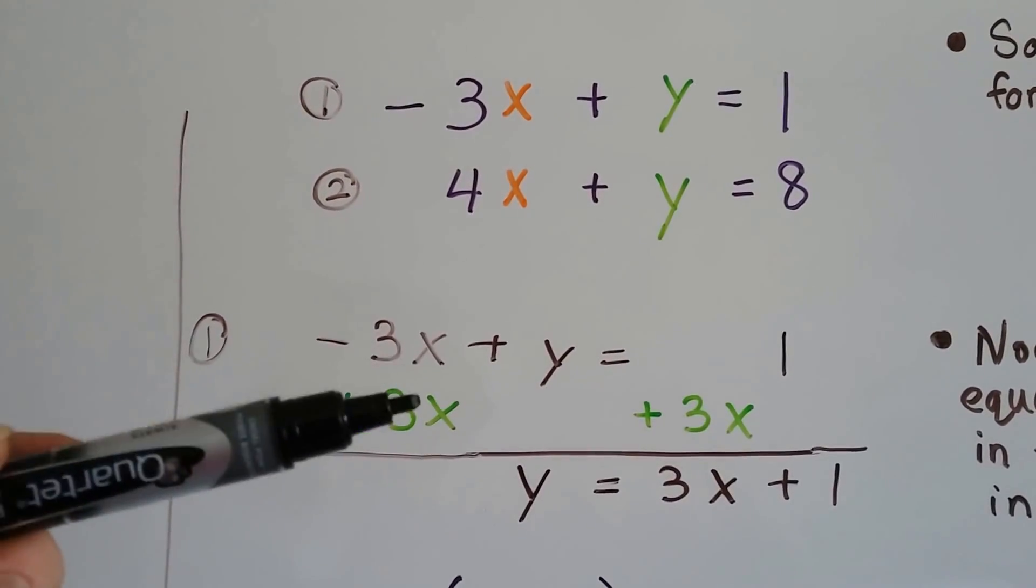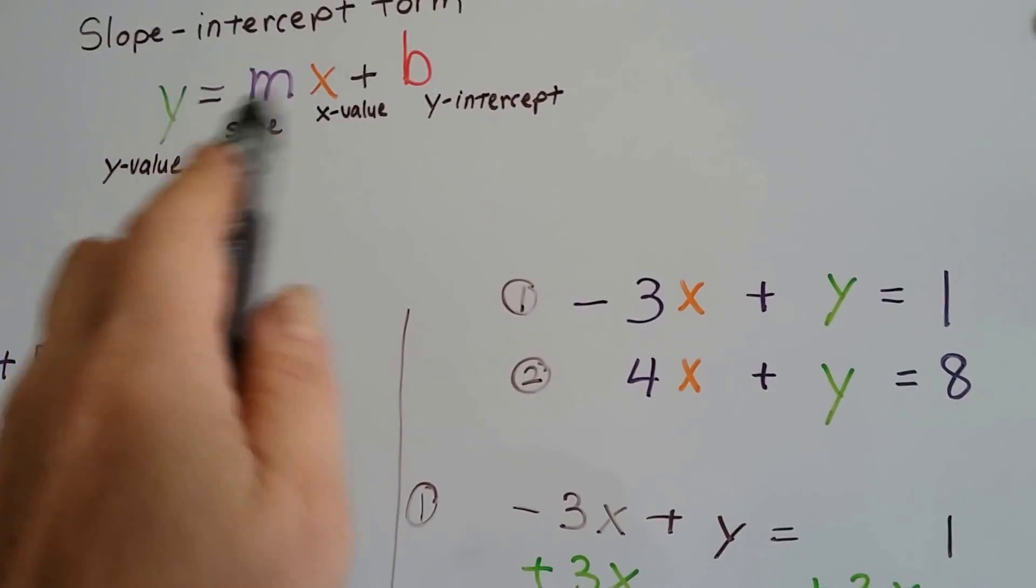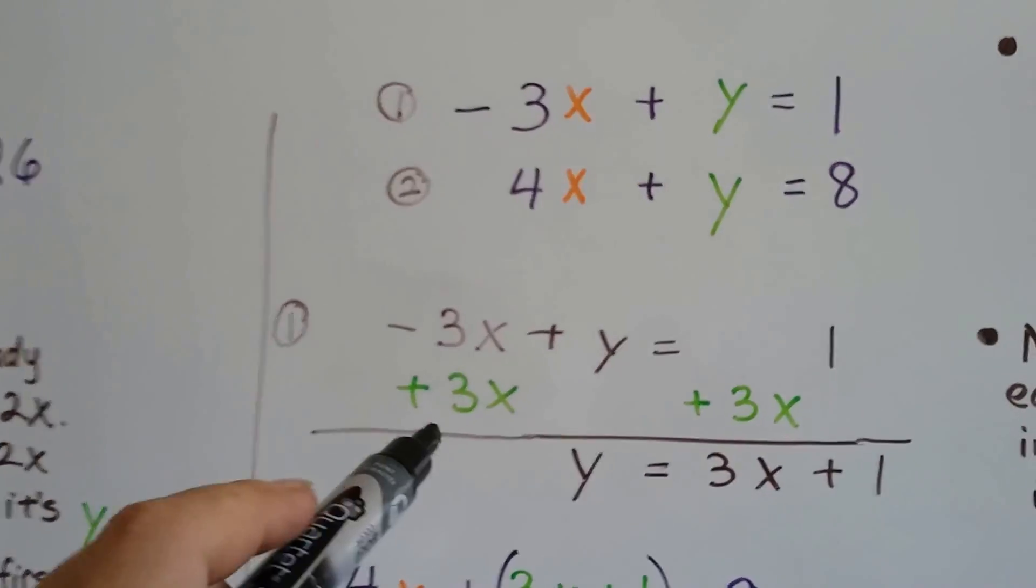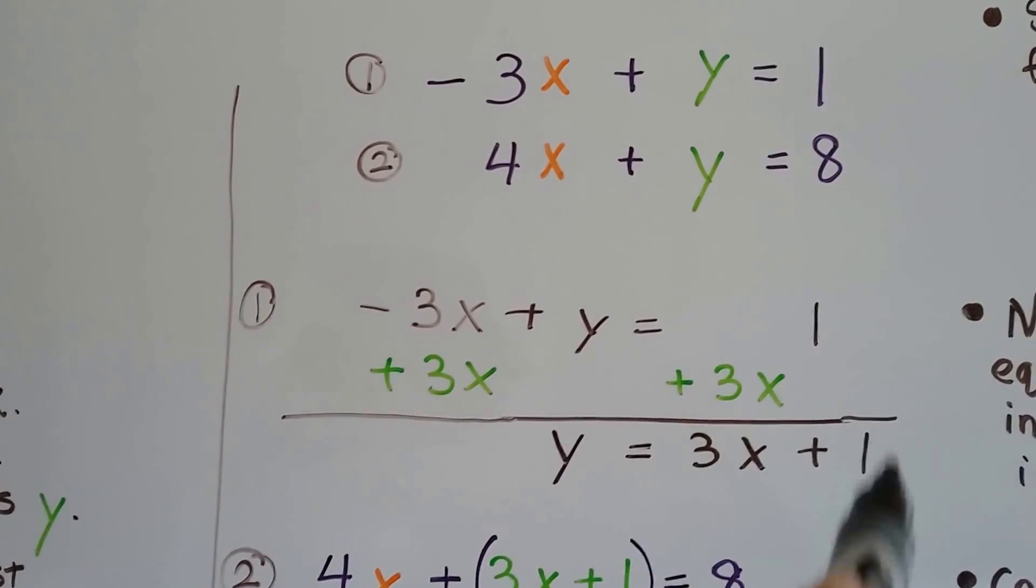We want to get y to one side, like this. It'll actually look like slope-intercept form. We want to get the y to one side, so we can say this equals the y. And the way we did it was, we've got negative 3x plus y equals 1.